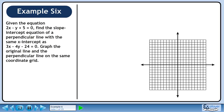Given the equation 2x minus y plus 5 equals 0, find the slope-intercept equation of a perpendicular line with the same x-intercept as 3x minus 4y minus 24 equals 0. Graph the original line and the perpendicular line on the same coordinate grid.